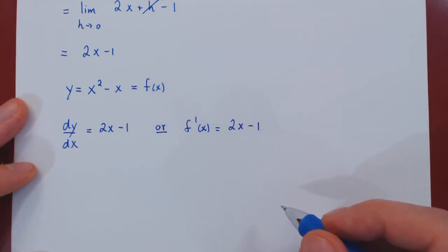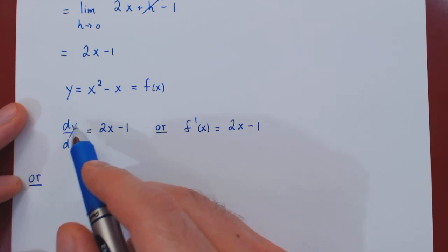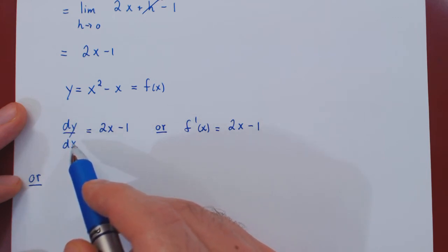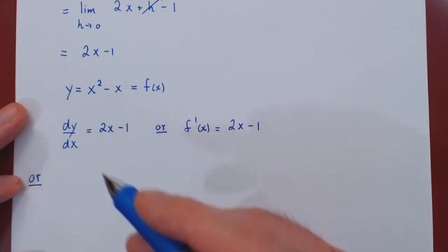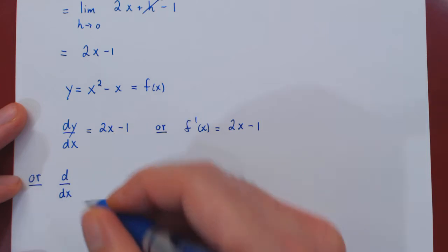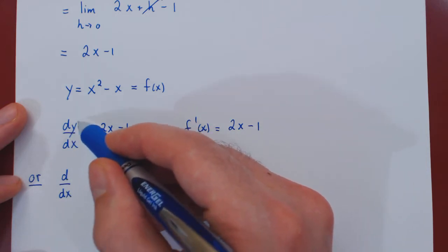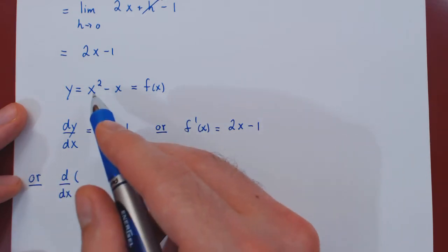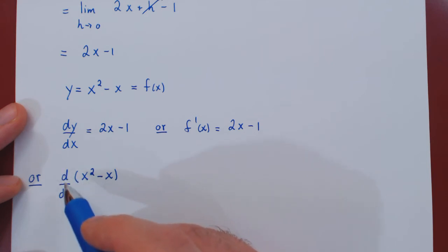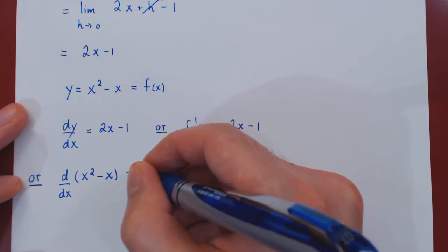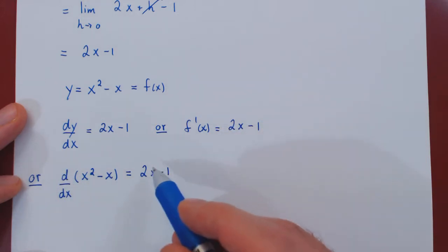We can write the derivative in a third way. We can view dy over dx as a small change in y over a small change in x, giving the slope of the tangent line. But we can also separate d over dx, thinking of it as the action of taking the derivative with respect to x. Replacing y by its expression x squared minus x, we write: the derivative with respect to x of x squared minus x equals 2x minus 1.